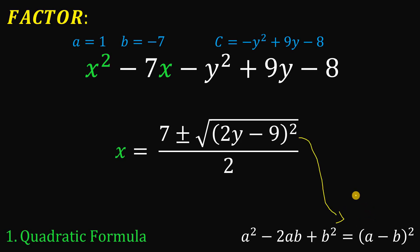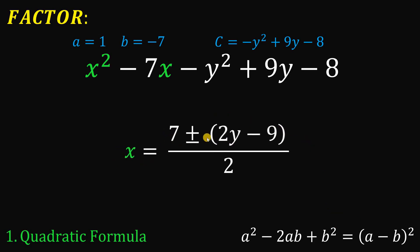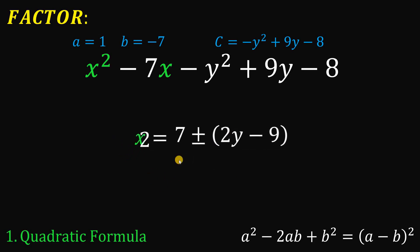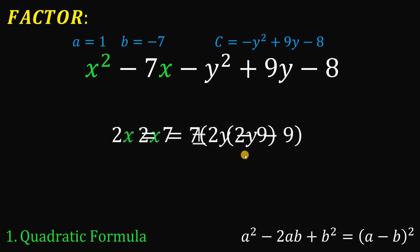Taking the square root of 2y minus 9 squared cancels the square root, giving us x equals 7 plus or minus 2y minus 9, all divided by 2. Multiplying both sides by 2, we have two possible cases: the first is 7 plus 2y minus 9, and the second is 7 minus the quantity 2y minus 9.